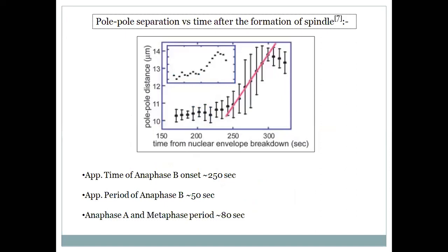This plot shows pole-pole separation versus time. During metaphase/anaphase A, the pole-pole distance remains essentially constant. Then it steadily and linearly increases during anaphase B for approximately 50 seconds, giving us a timescale for anaphase B of roughly 50 seconds. This linear character is again evident.